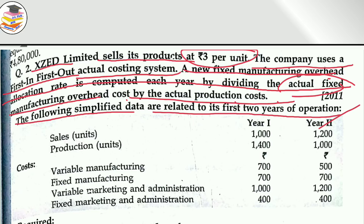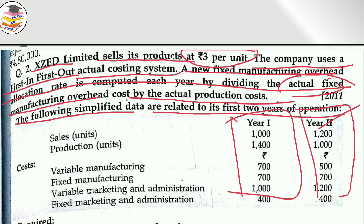The following simplified data are related to first year. You have two years of data given — here is the first year and the second year. Sales figures are given for the first year.